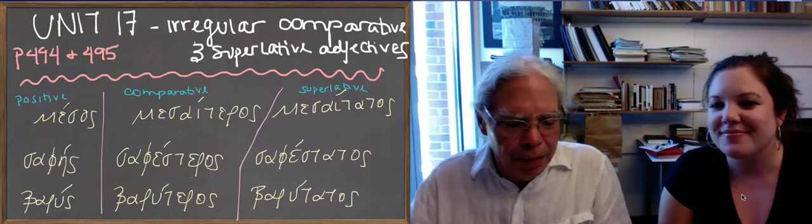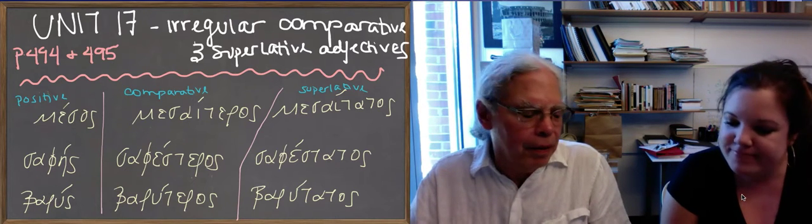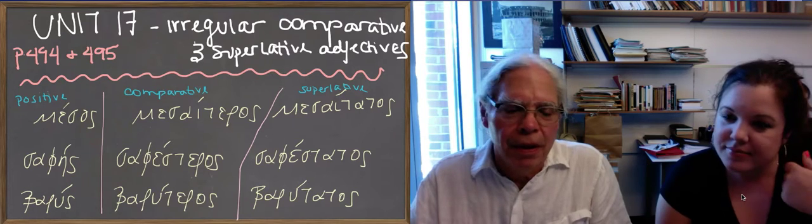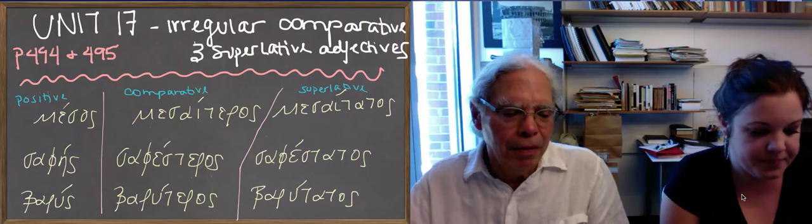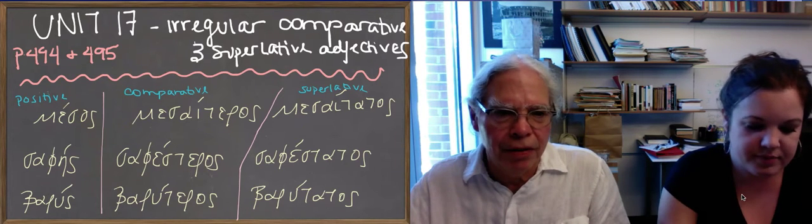Okay, we're back again talking about unit 17 and about comparison of adjectives. We talked about the so-called regular comparison of adjectives, the teros and the tatos suffixes.